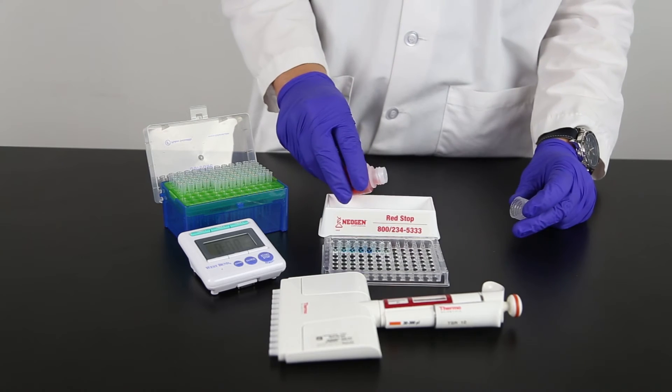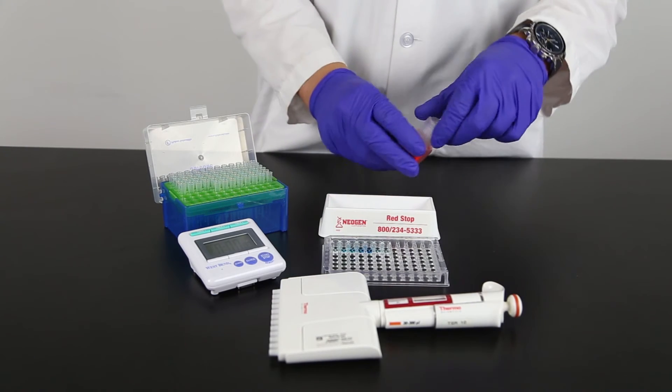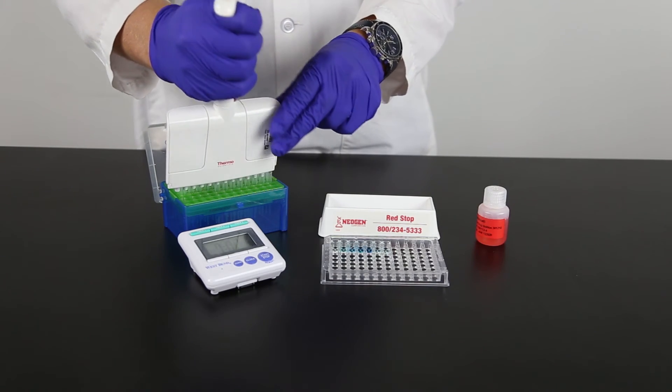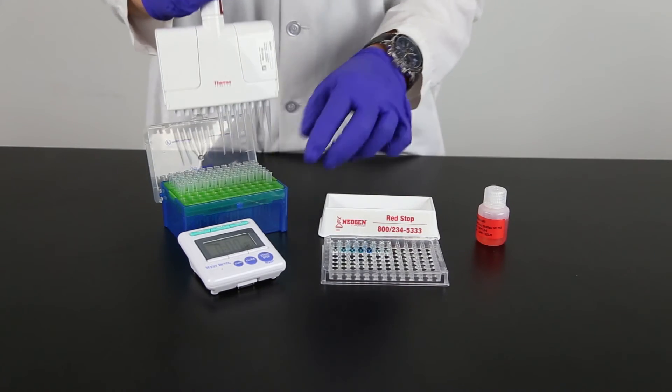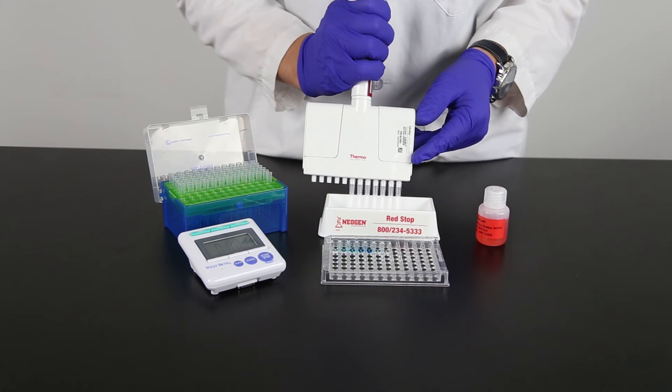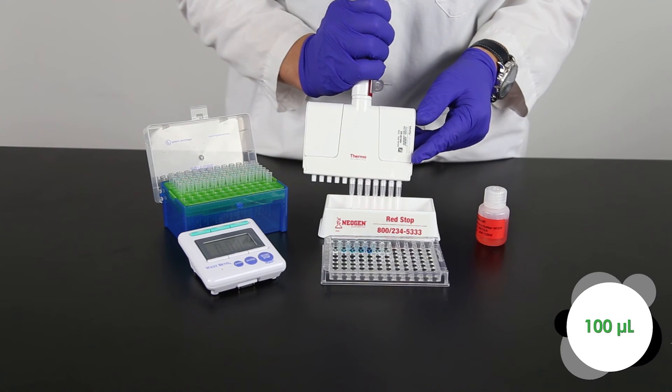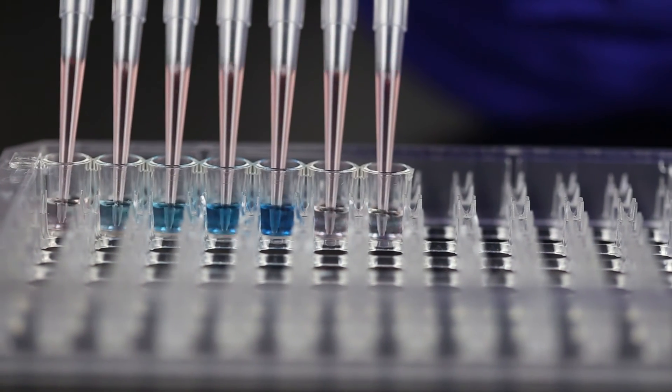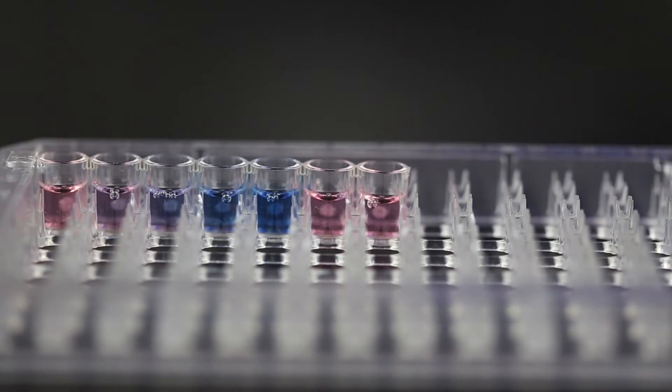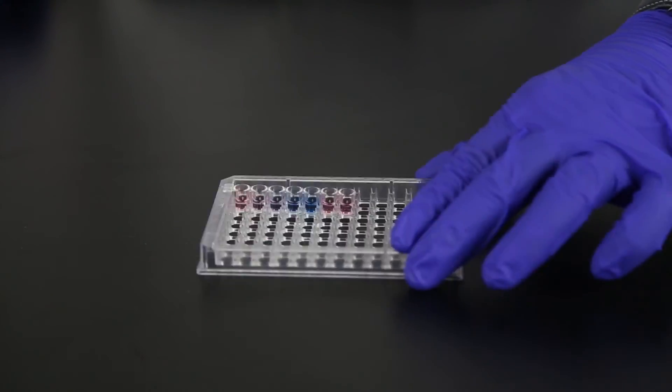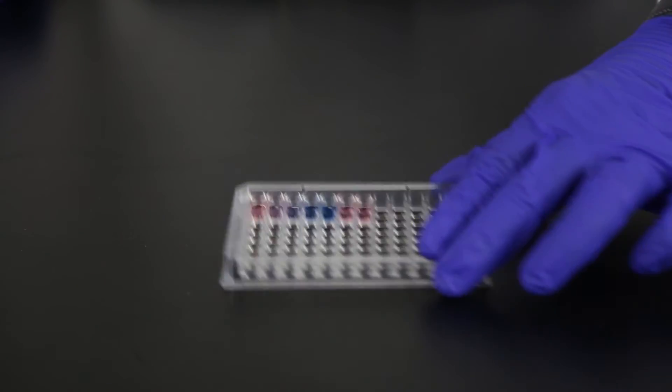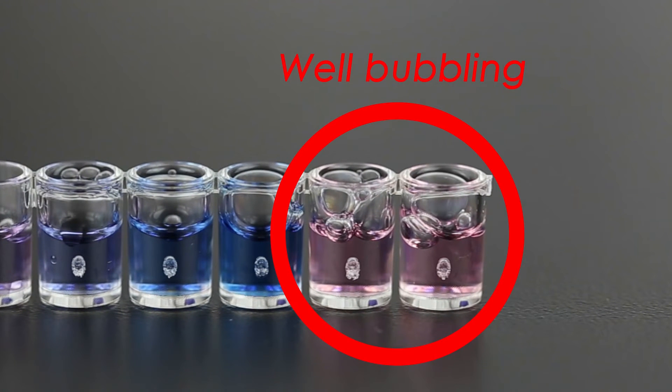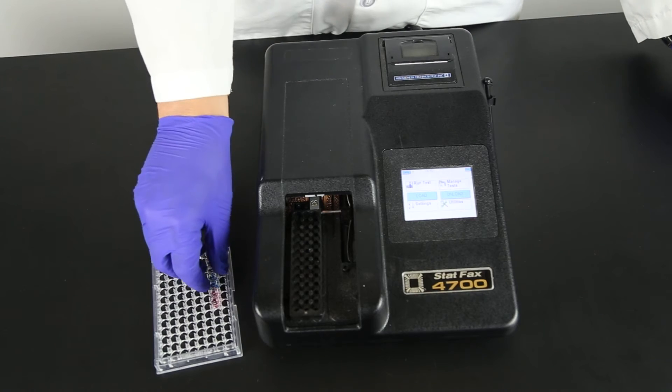Prepare for the next step by pouring the needed volume of red stop solution from the red labeled bottle into a clean reagent boat. At the completion of the incubation, do not wash the wells. Using new tips on the 12-channel pipetter, transfer 100 microliters of red stop solution into each well and mix by sliding the microwell holder back and forth on a flat surface. Make sure there is no layering or bubbling in the wells.